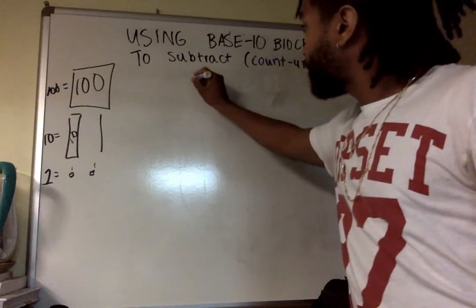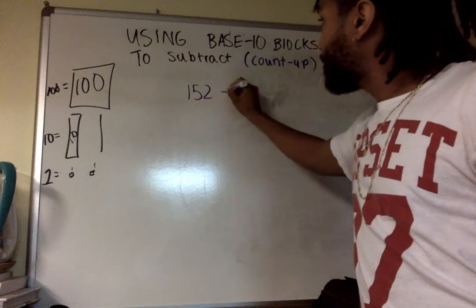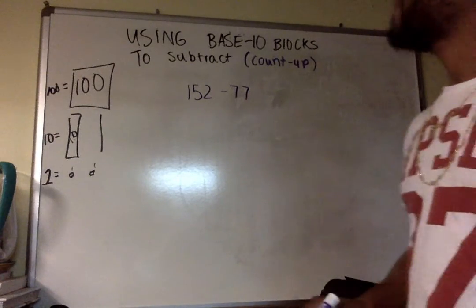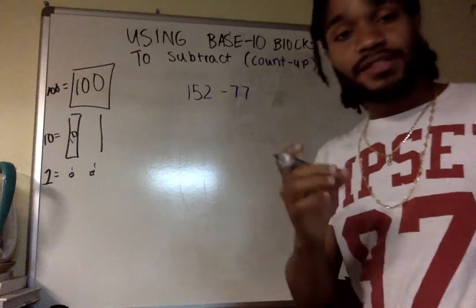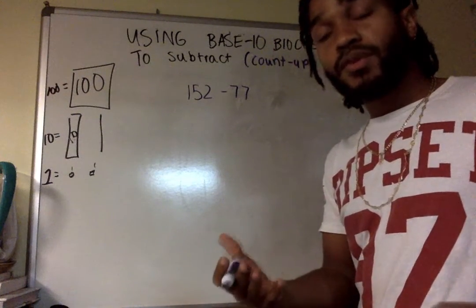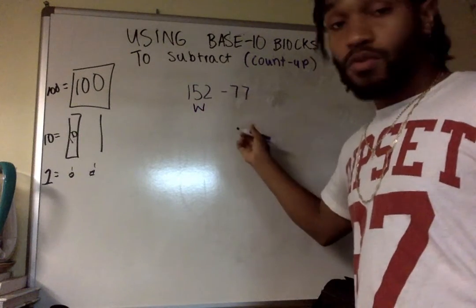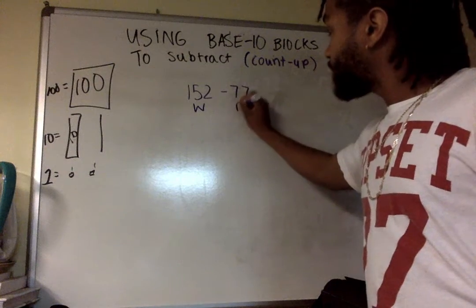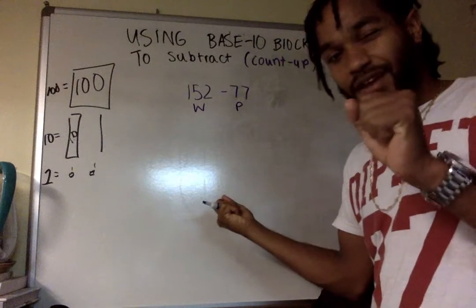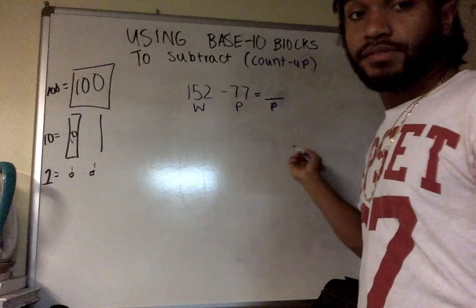Let's say I want to do the equation 152 minus 77. The first thing I have students do is label the equation to let me know what the numbers actually represent. In subtraction, the first number is the whole. The second is the part. Because you have the whole, you take away your part, and you're trying to find out what that other part is.